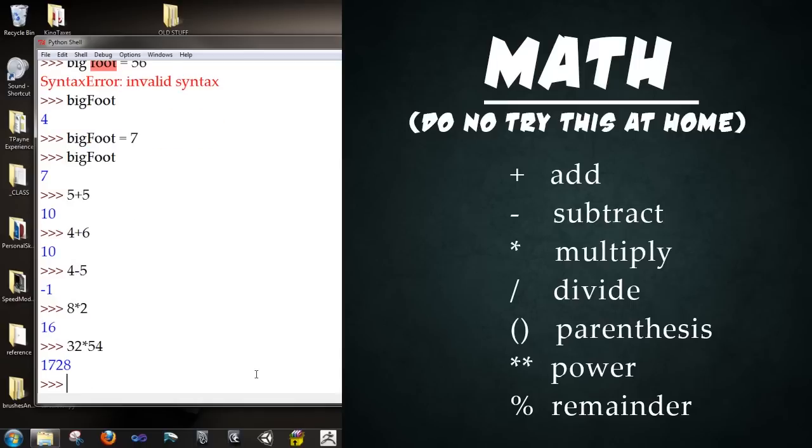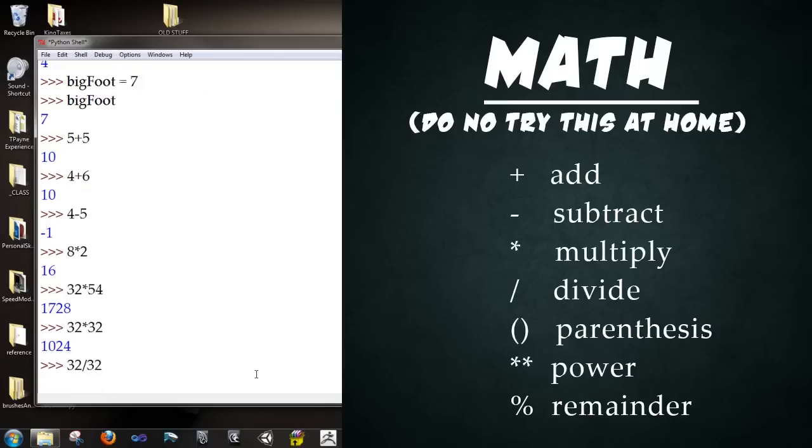I want you to try out a couple different math operations. The plus, the addition, the subtraction, division, and multiplication. Star is for multiplication. So we can go 32 times 32. Enter. Try that. 32 divided by 32. Try that.